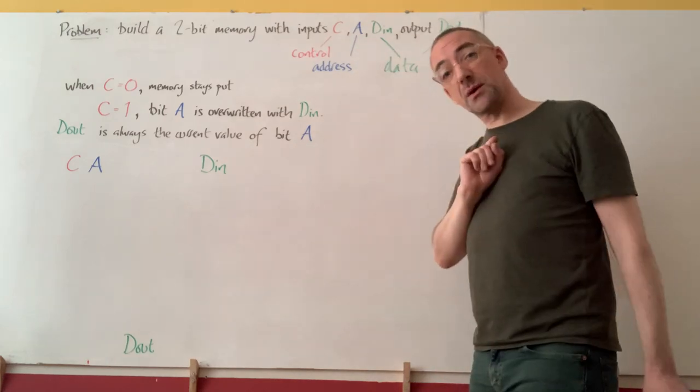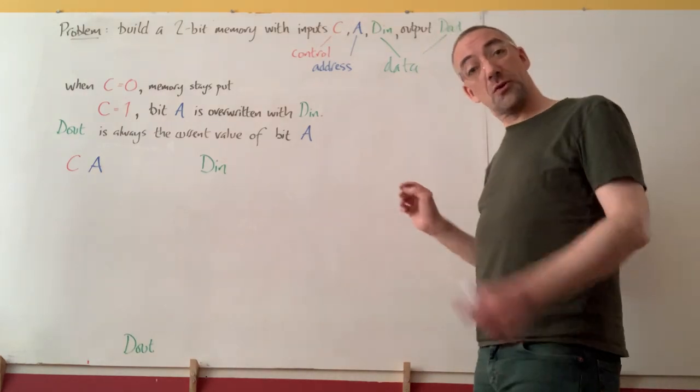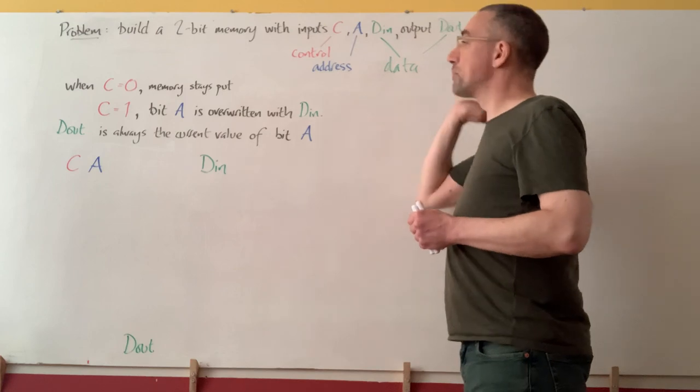Meanwhile, in the case that we're reading, we will need a data output to tell us what's in the memory location that A is pointing to.